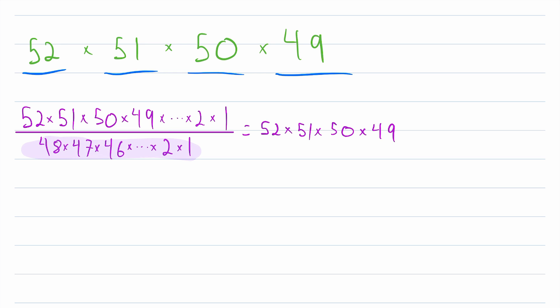But what is this expression equal to, this 48 times 47 times 46, and so on? Well, of course, that's just 48 factorial. And what is 48 factorial? Well, it's equal to 52, the collection size, minus 4, the amount of objects we're ordering, factorial. So let's go ahead and replace that.